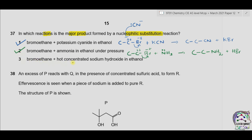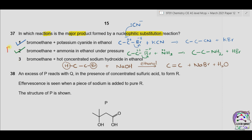Reaction 3: bromoethane plus hot concentrated sodium hydroxide in ethanol. This causes an elimination reaction. Bromine is on one carbon and hydrogen is eliminated from the adjacent carbon, giving an alkene product along with NaBr and H₂O. This is not a nucleophilic substitution reaction — it is elimination. Option 3 is incorrect. Since reactions 1 and 2 are correct, the answer is B.